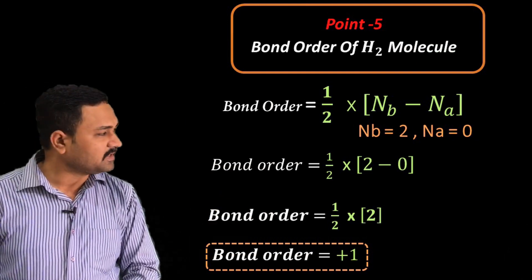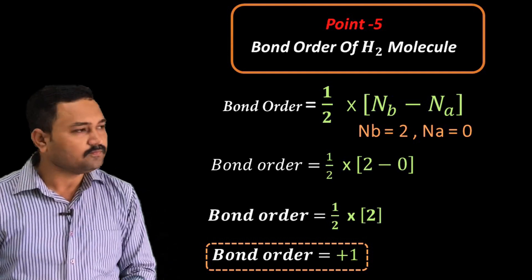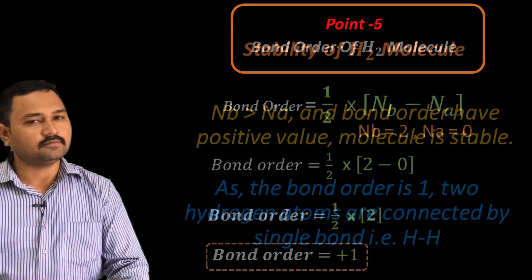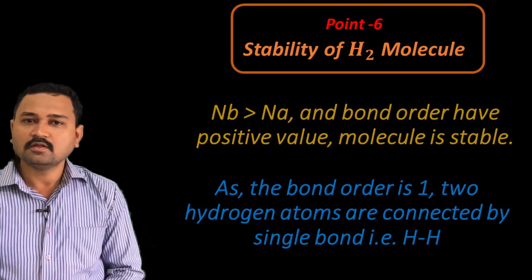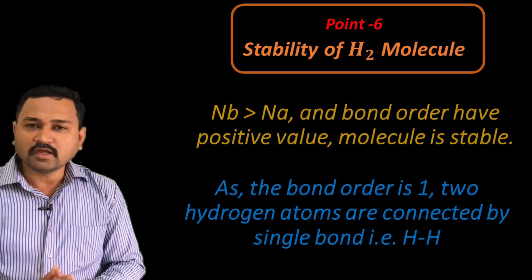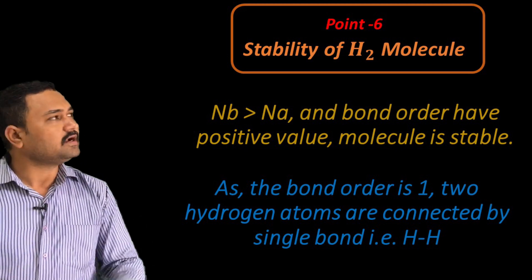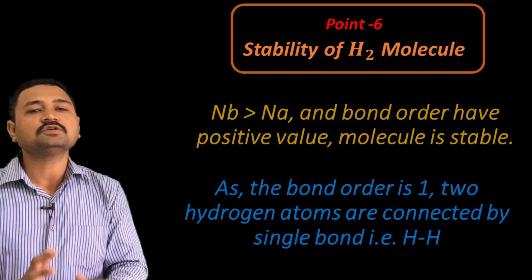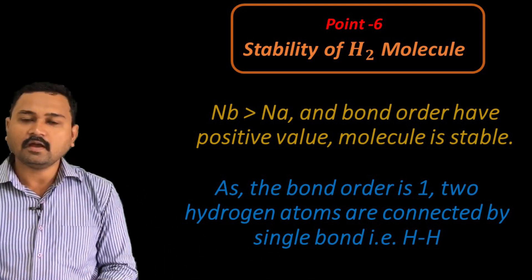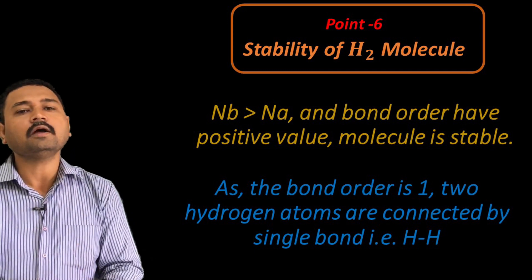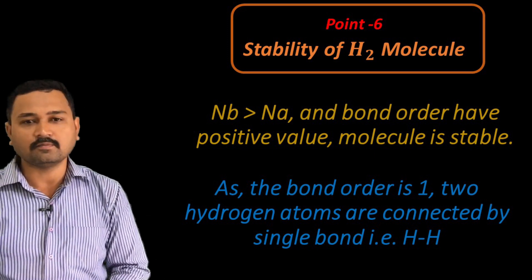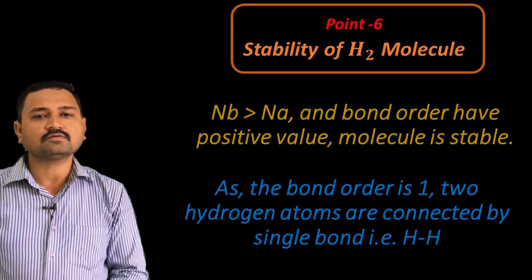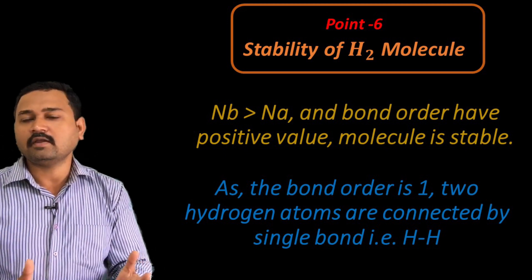By simple calculation: bond order = 1/2 × (2 − 0) = 1/2 × 2 = 1. So bond order equals +1. Point number six is the stability of the hydrogen molecule. The number of bonding electrons is greater than the number of antibonding electrons — Nb is greater than Na — and the bond order is a positive value. Hence, the hydrogen molecule is a stable molecule, and since the bond order is 1, the two hydrogen atoms are connected by a single bond.